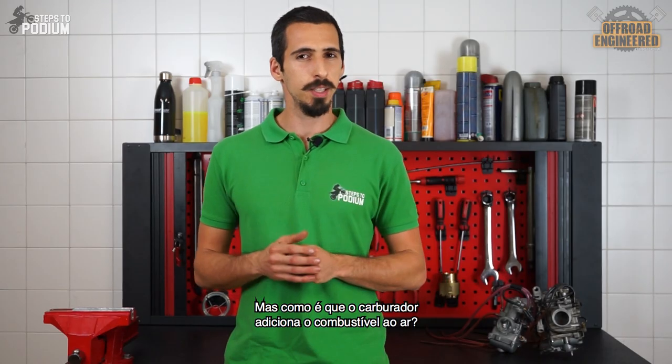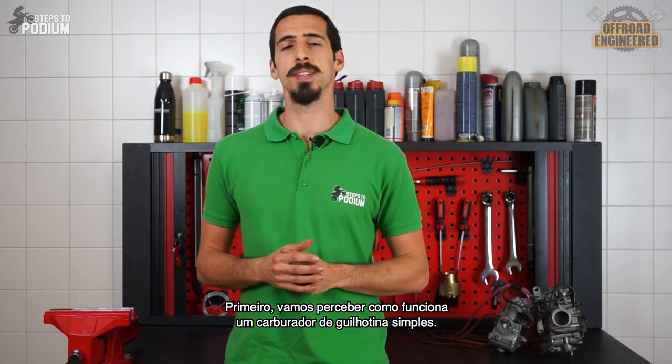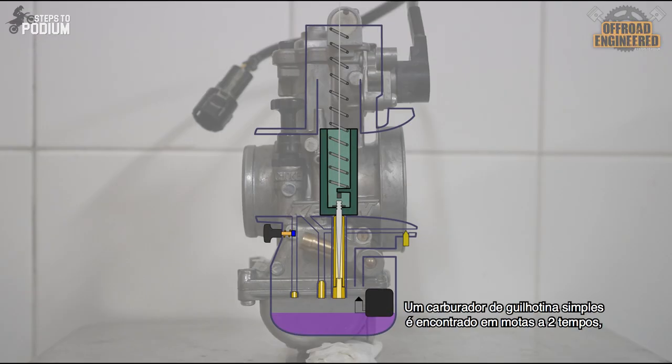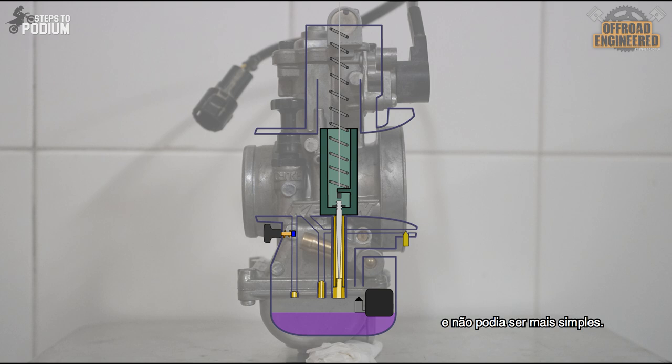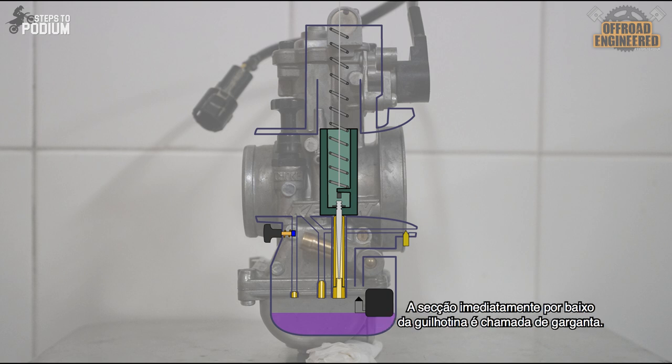But how exactly does a carburetor mix air and fuel? Let's first take a look at the simple mechanical slide carb. A carburetor with a mechanical slide is found on two-stroke dirt bikes and the way it works couldn't be simpler. As the name implies, you have a mechanical slide crossing the main air passage, which is attached to the throttle cable. How much you twist the throttle determines how much the slide is blocking the airflow in the main air passage. The section right under the slide is called the throat.